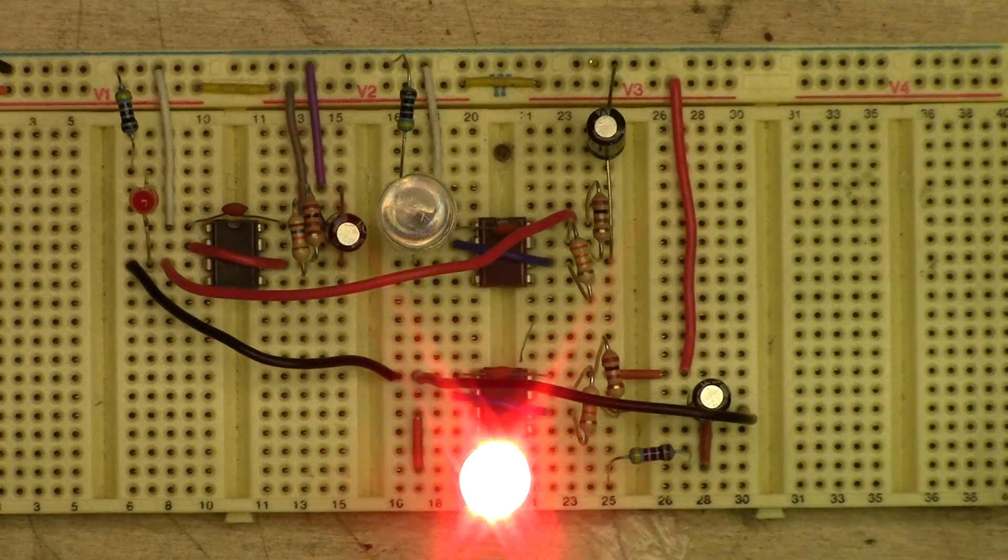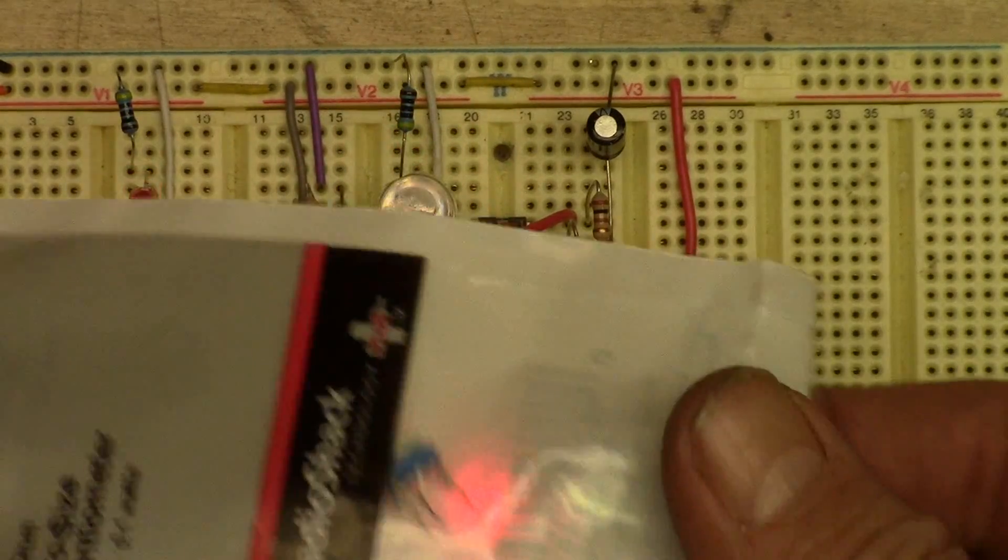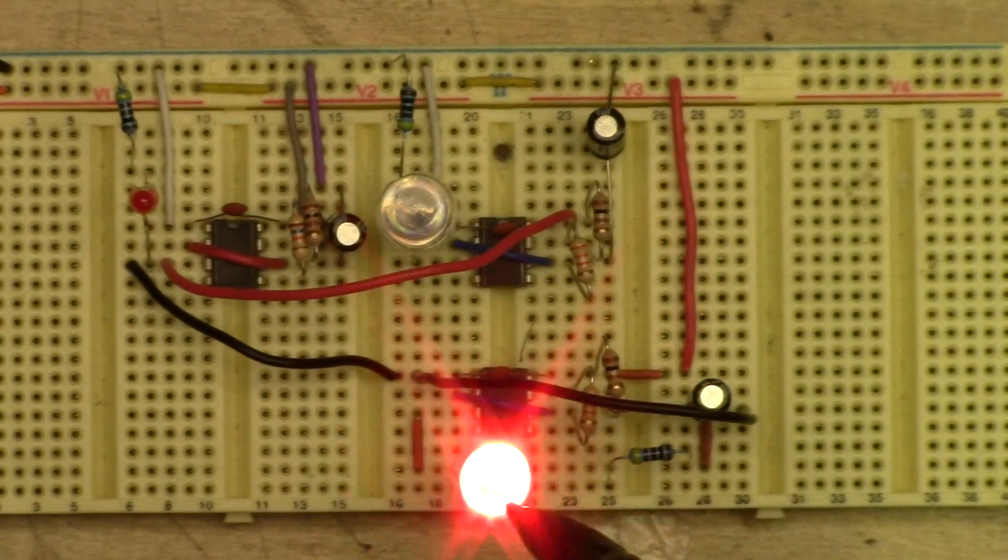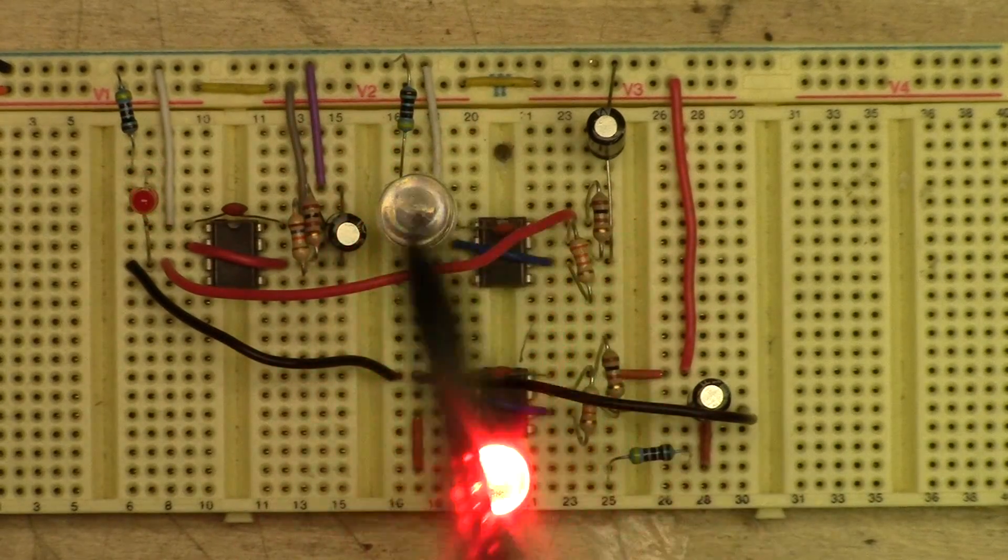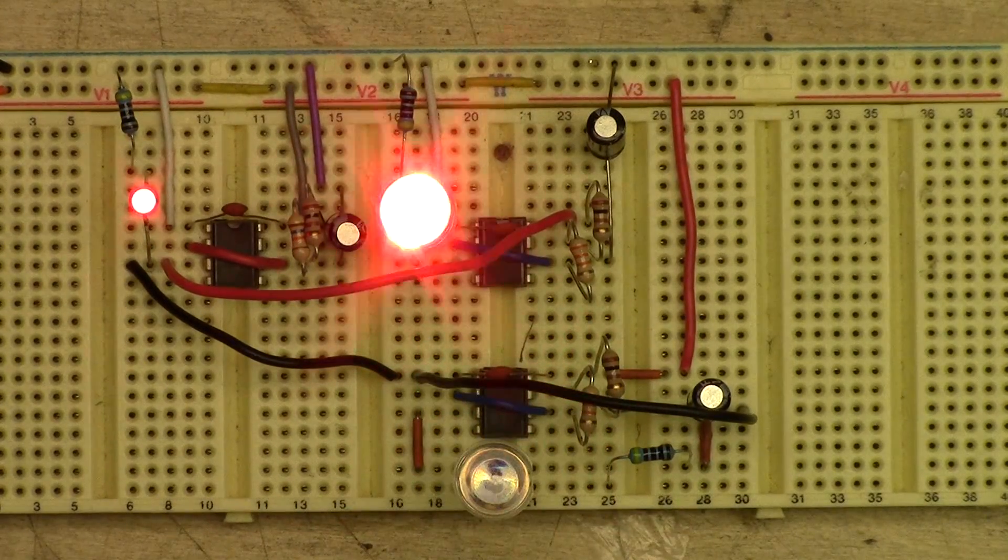Next up, I'm going to put a couple of little trim pots in. Let's see if I can get those in line, and maybe we can vary the pulse width of this, and we can also vary the duration time. Let's give that a little experimentation.